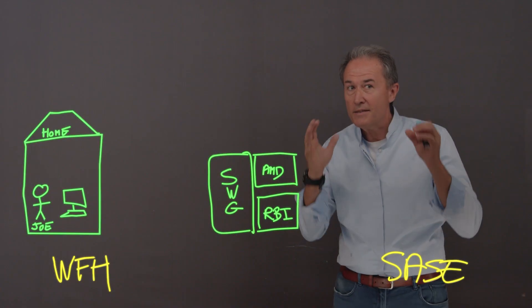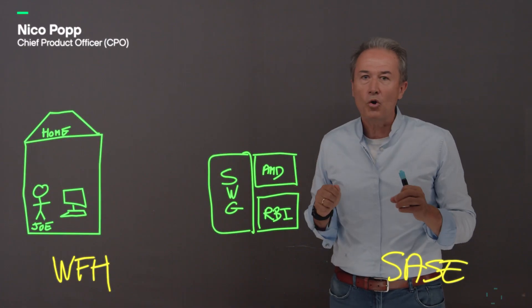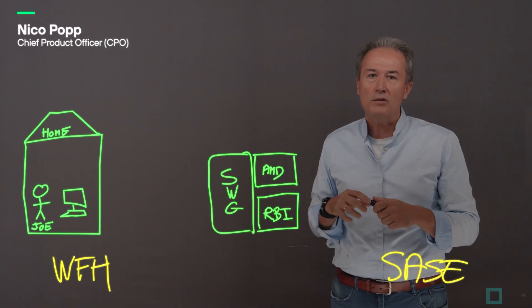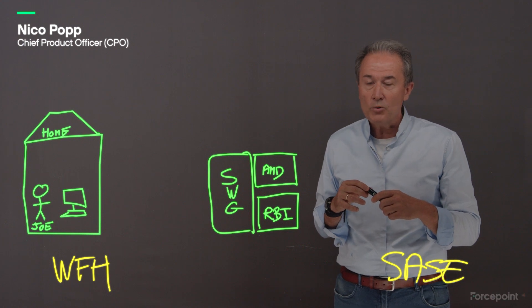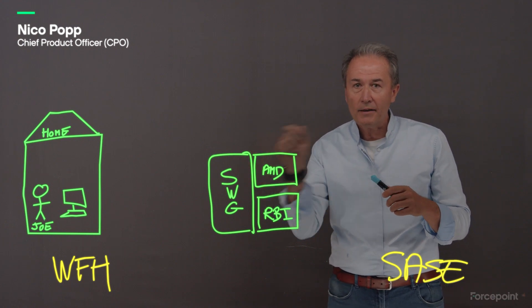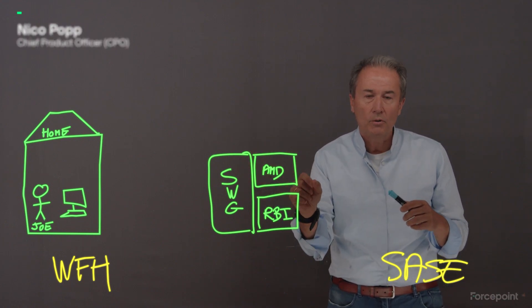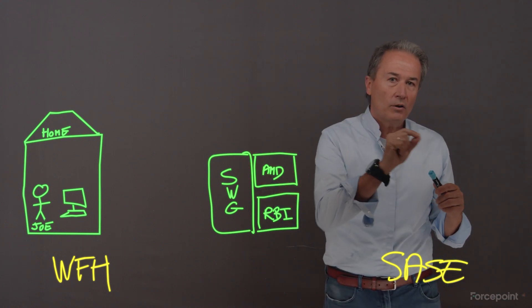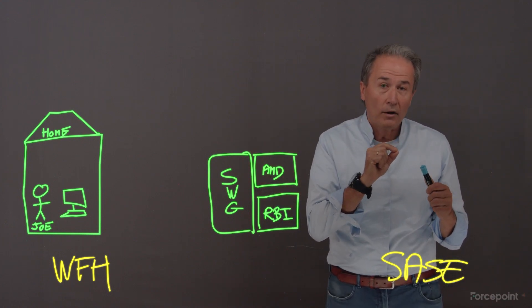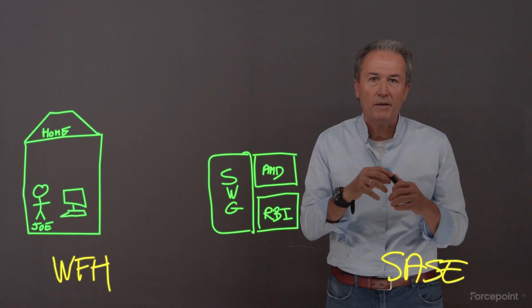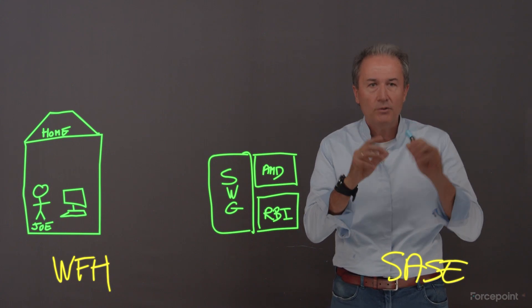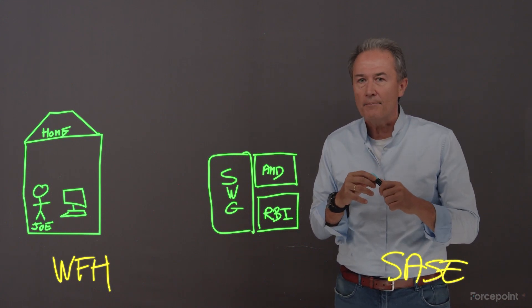Now we can talk about the second role, the second mission of SASE, which is really to connect Joe to the work resources, the work application, and to secure the data.